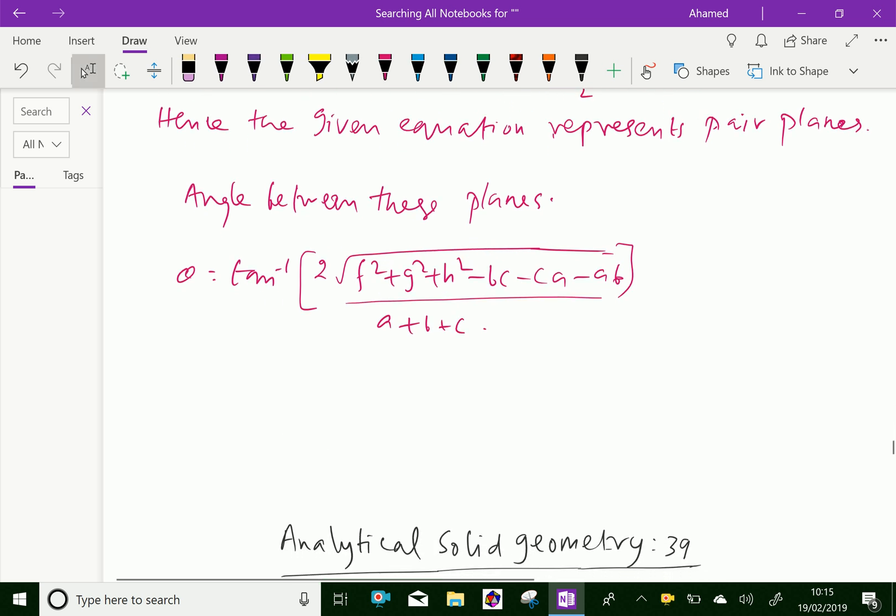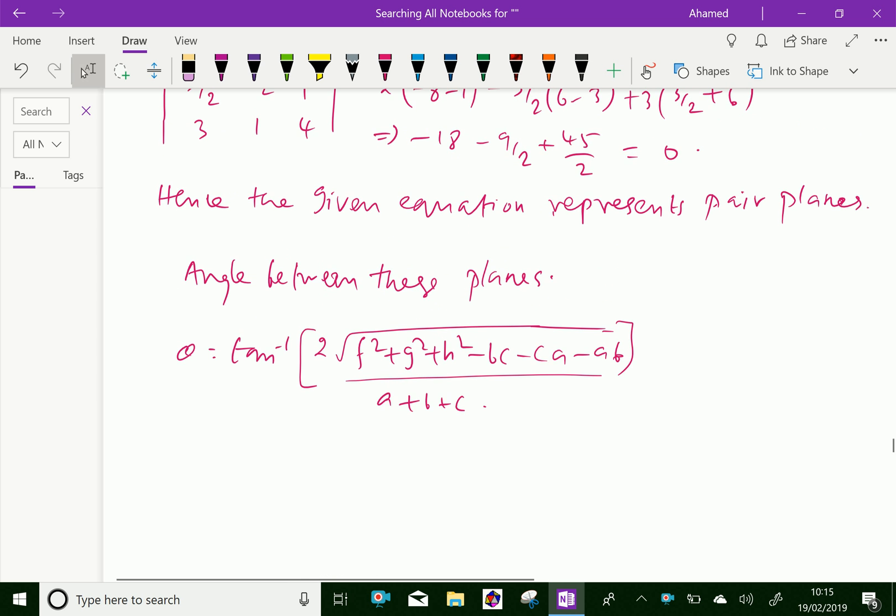We will apply the values which gives tan⁻¹[2 × √(1² + 3² + (3/2)² + 8 - 8 + 4) / (2 - 2 + 4)].